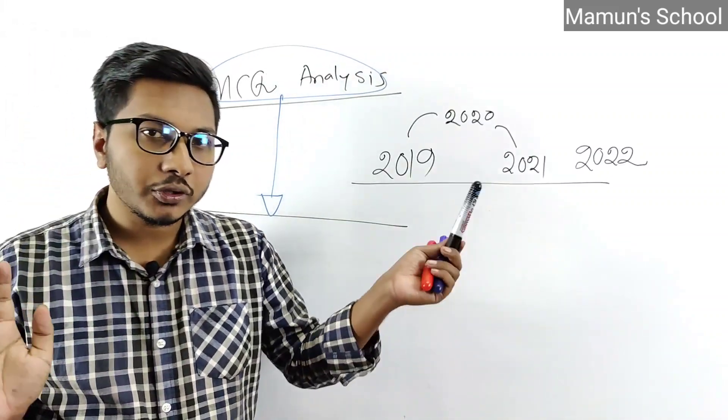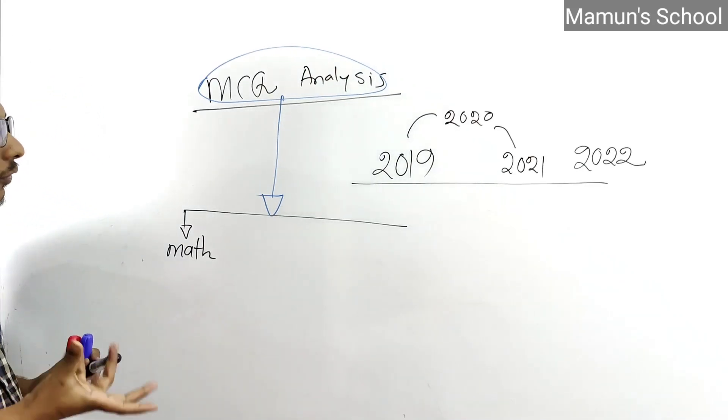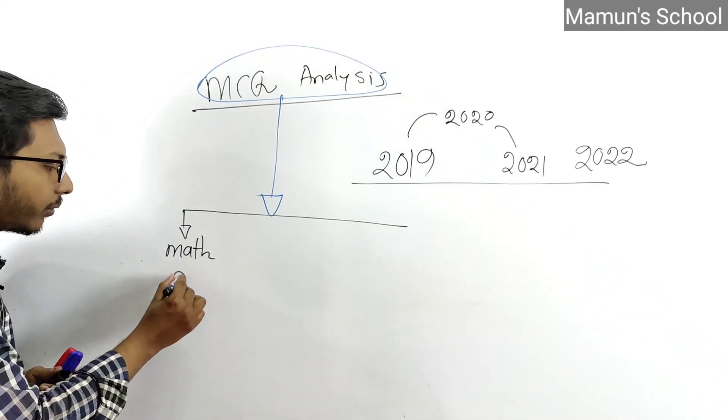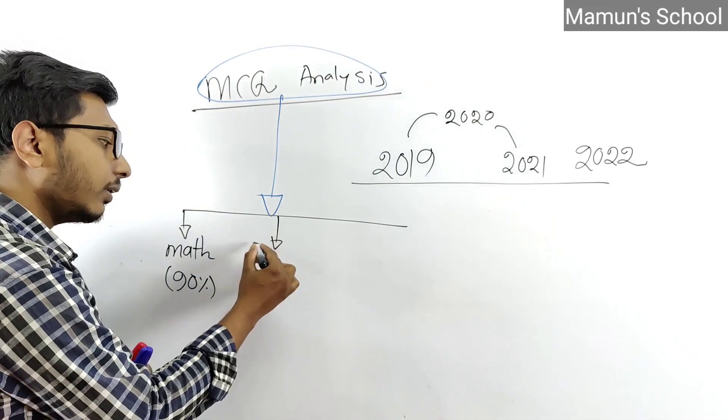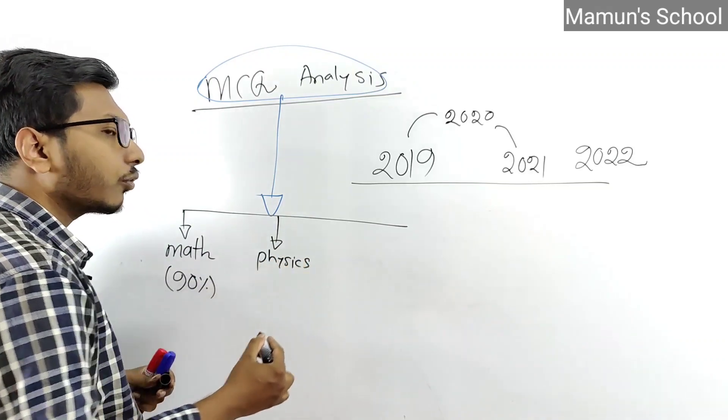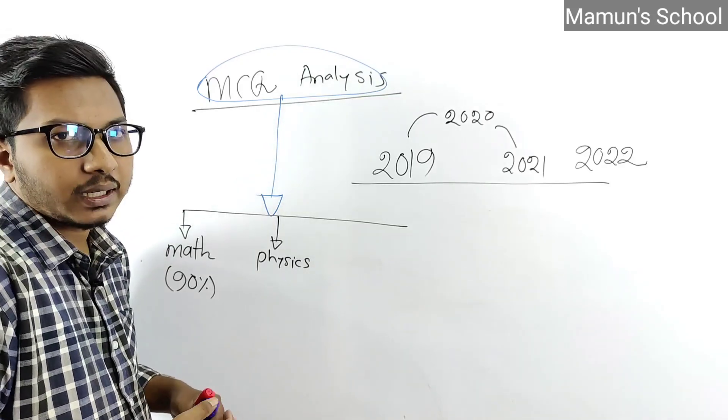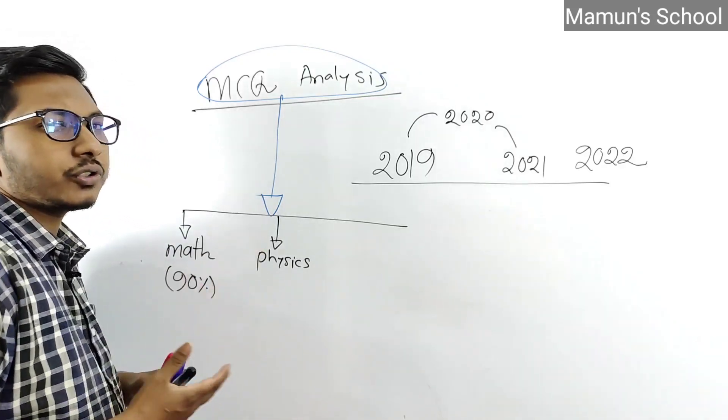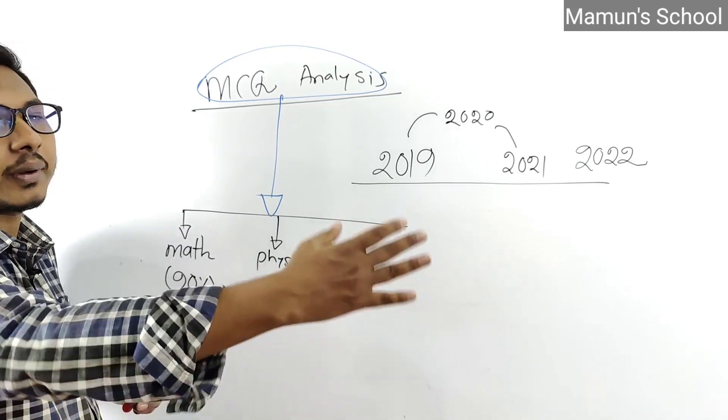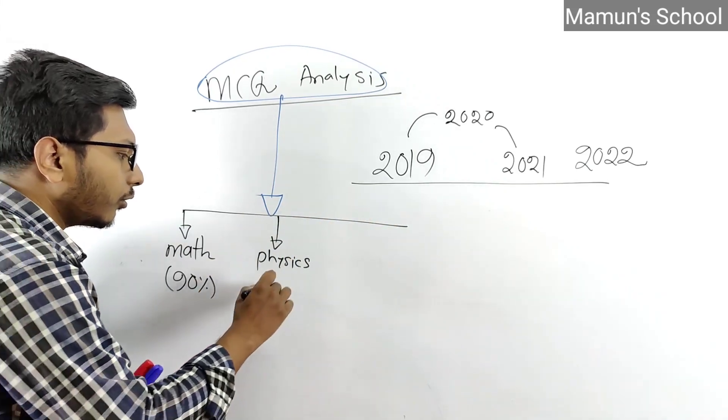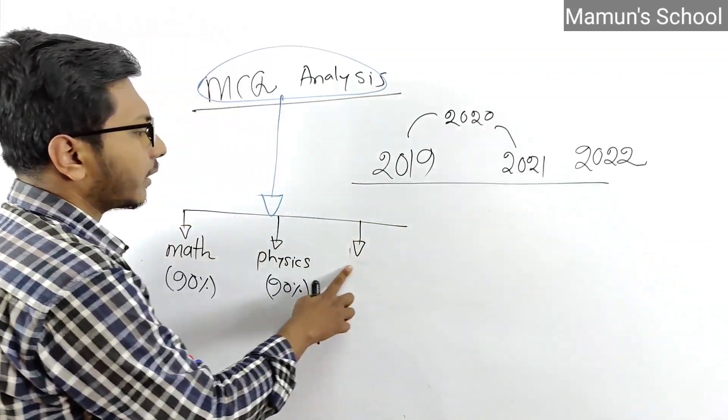Through shortcuts and tricks, you can solve questions quickly. But I emphasize that you should first understand the basics properly, then learn shortcuts. When you do this correctly, you can achieve 90 to 95 percent coverage of the question patterns. Then questions become easy to solve.